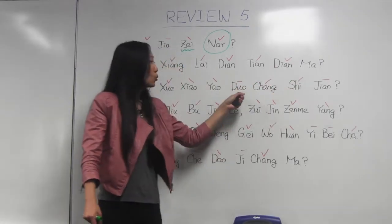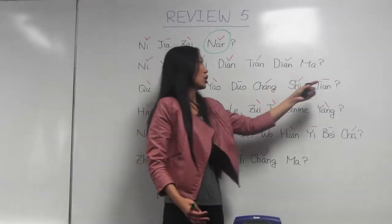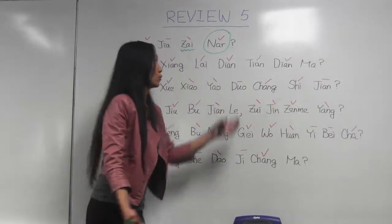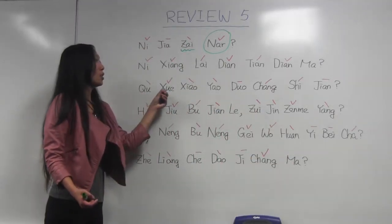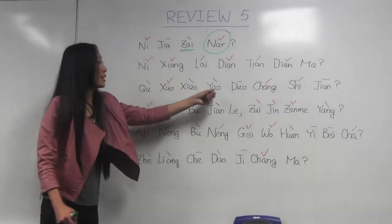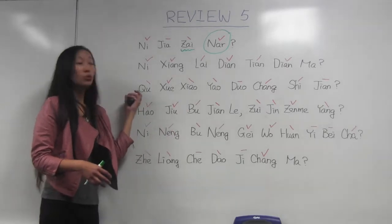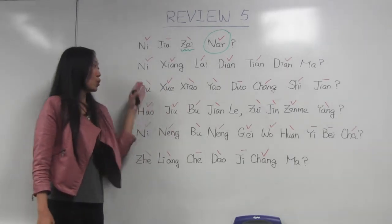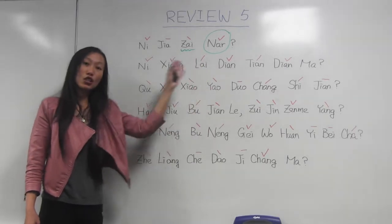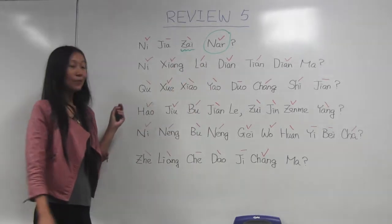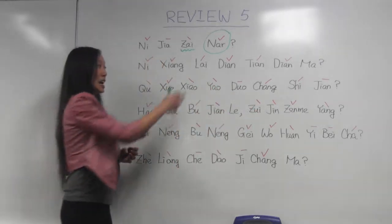The third question: 去学校要多长时间? 多长 means 'how long,' and 时间 means 'time.' 要 is like 'take.' So: how long does it take to go to school? 去学校要多长时间? 多长 is the question word here — how long.